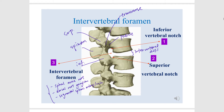Hi guys, it's me again and welcome to my channel. Today I would like to share with you the structure between each vertebral body and what each one is called. The first structure is the inferior vertebral notch — here you can see the inferior vertebral notch.